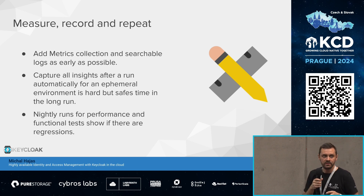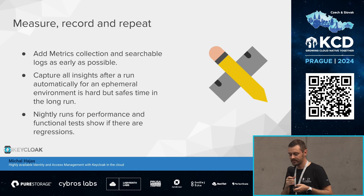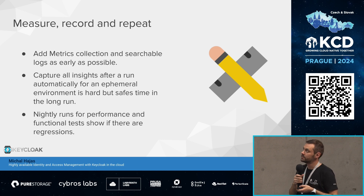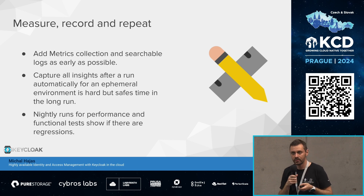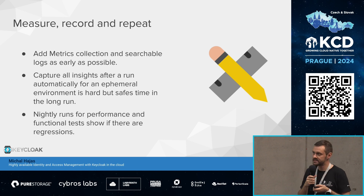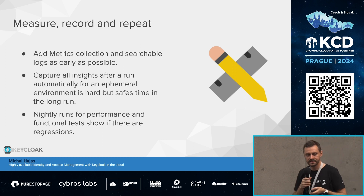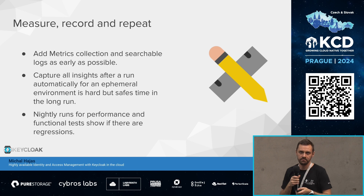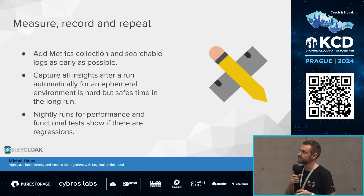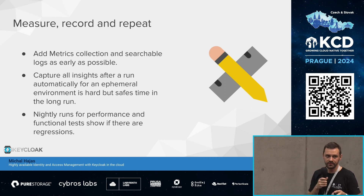We also need to measure very often, so we have nightly runs for performance and functional tests. This proved really useful a few weeks ago when Keycloak main changed the default hashing algorithm to Argon2, which has very high memory consumption and completely broke our garbage collection. We saw a huge performance drop. If we hadn't had these performance tests, we might have released a new Keycloak version with the issue undetected. Instead, we were able to fix it before the release.